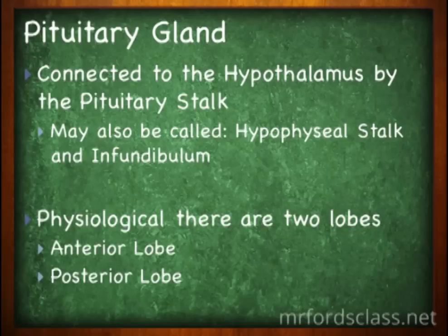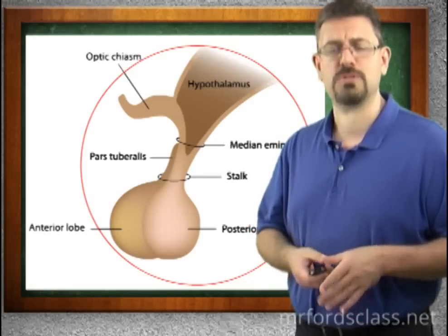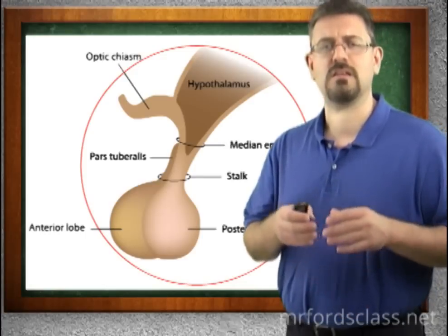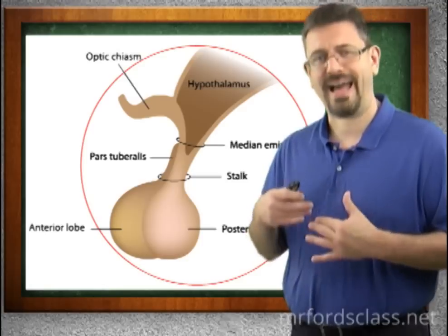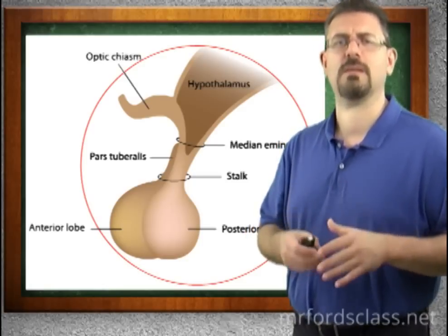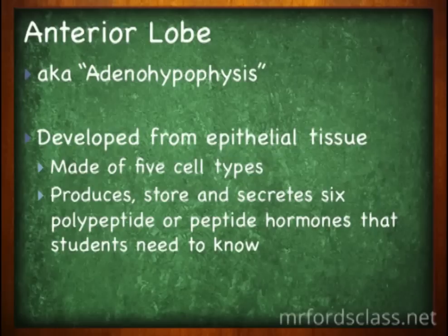Physiologically, there are two lobes to the pituitary gland. The front lobe, the anterior lobe, is developed from epithelial tissue, while the back lobe, the posterior lobe, is developed from nervous tissue. The anterior lobe is also known as the adenohypophysis. It is made of five types of cells, and each of these cells produces a specific hormone. The adenohypophysis produces, stores, and secretes six polypeptide or peptide hormones that you need to be aware of.